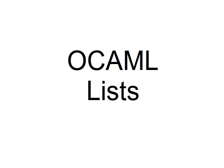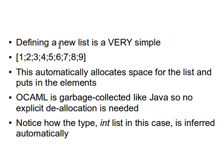Hello again to this series on data structures in OCaml. In this video and the coming few videos we're going to learn OCaml lists. Defining a list in OCaml is very simple — all you need to do is use square brackets with the elements inside them. This is a list of integers 1 through 9, and the elements are separated by semicolons.